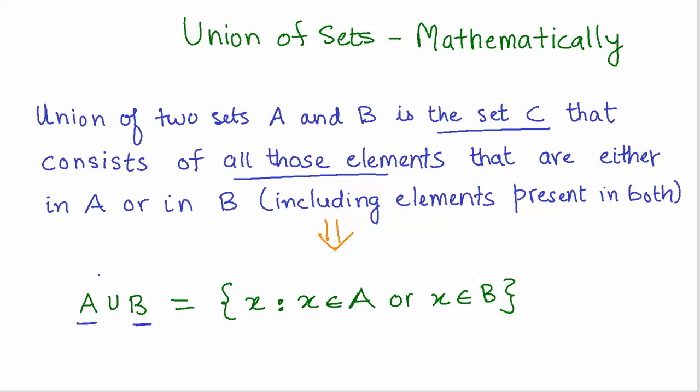A union B is defined as a third set which comprises of all the elements X where X belongs to either A or X belongs to B. We are simply taking the elements in A and B and combining them to form a new set.